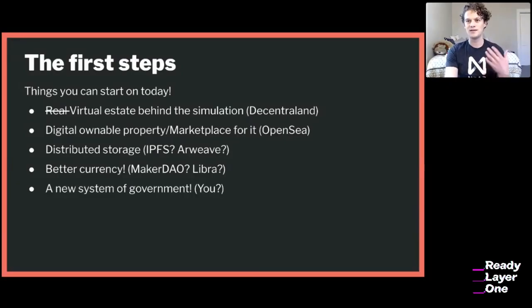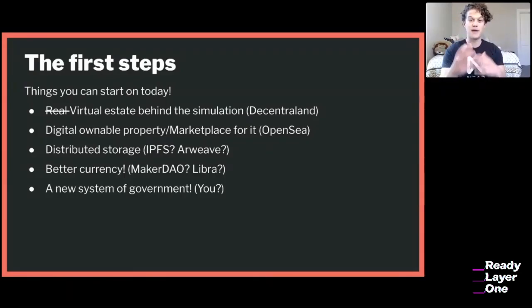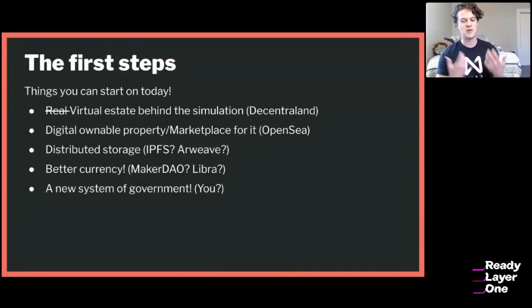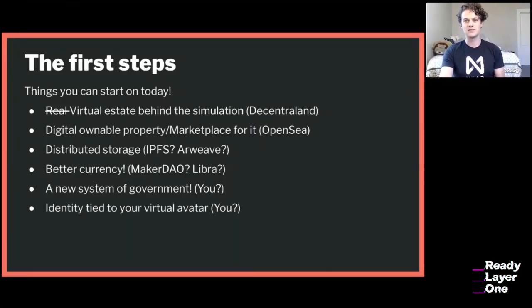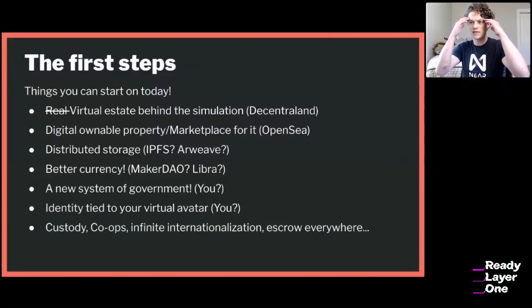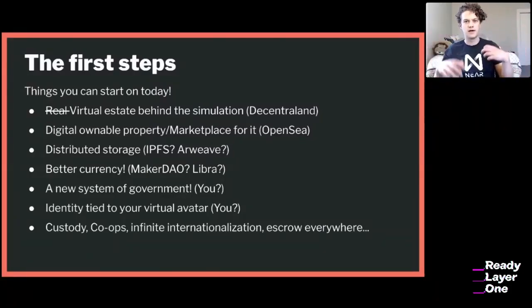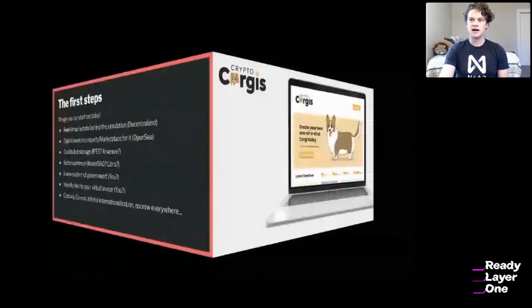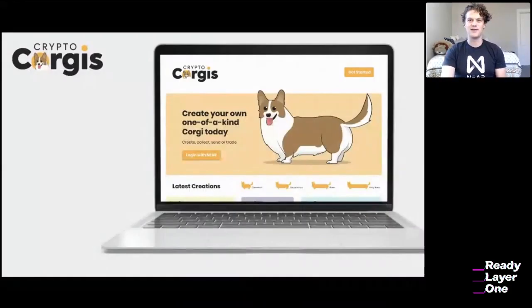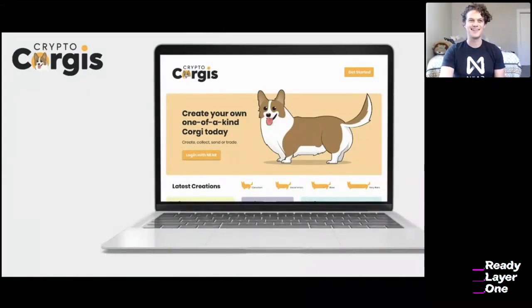We get into more philosophical things we can start developing today — a new system of government, maybe non-centralized. Does it make sense to subscribe to a government just because you happen to live in a physical location? Identity tied to your virtual avatar — some people are working on this. Then there's a long list of completely theoretical things: custody co-ops, infinite internationalization, escrow without trusted parties. Crypto Corgis was a fun example of NFTs of transferable goods.